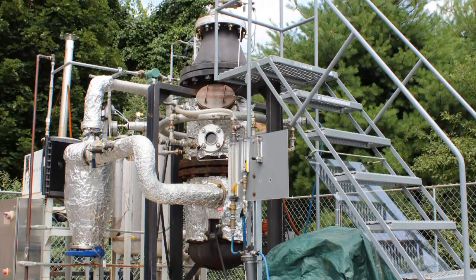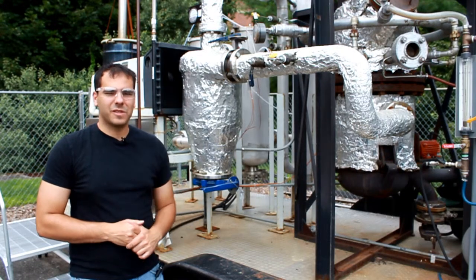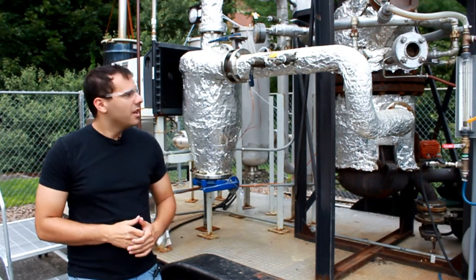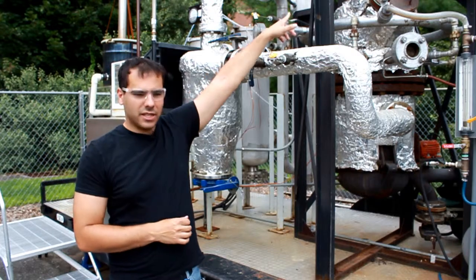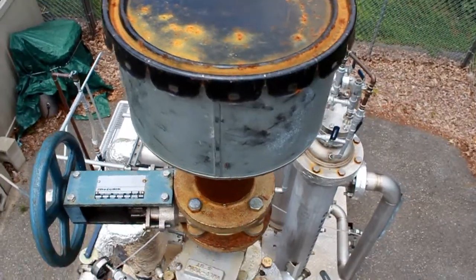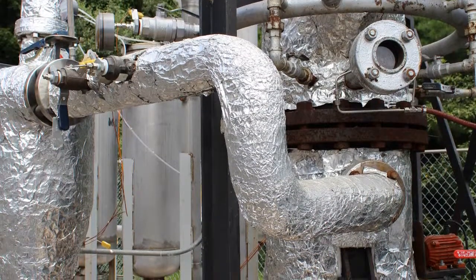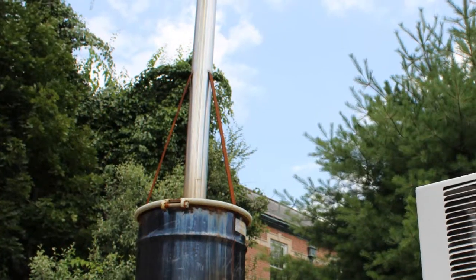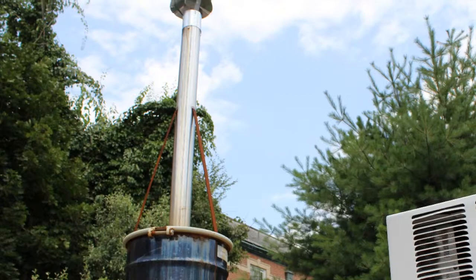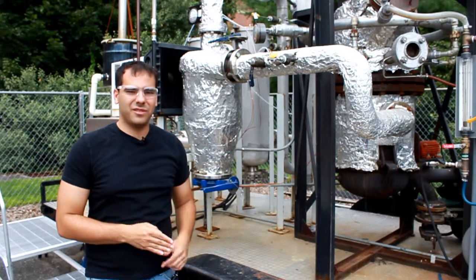This is a gasifier we have at C2E2. We use it for converting all sorts of solid biomass waste. The biomass is loaded up into the top of the hopper and then it falls down into the furnace where it's gasified at temperatures over 700 degrees C. The products then come out up the top and we get mainly hydrogen, methane, CO, CO2, and water.